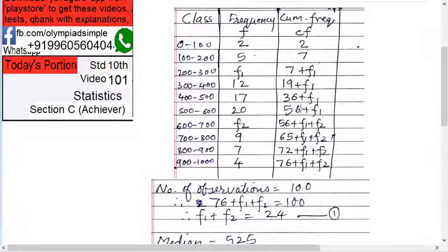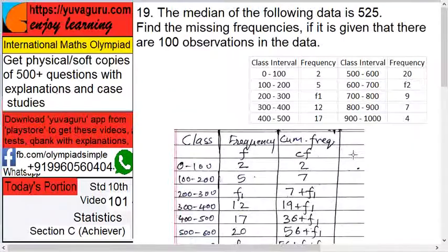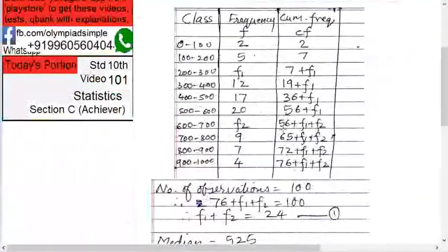Then plus f1 plus f2. Then 9 plus 56 equals 65 plus f1 plus f2. Then 72 plus f1 plus f2, and last 76 plus f1 plus f2. So this is the cumulative frequency. At the end, the total number of frequencies which are added up comes to this. But what is given? There are 100 observations, right?